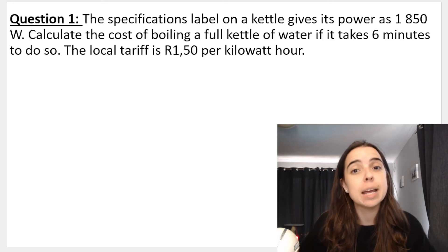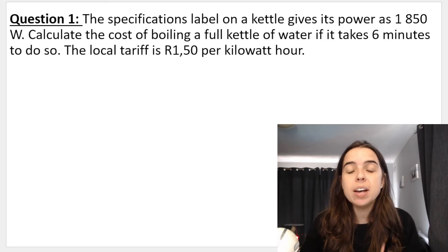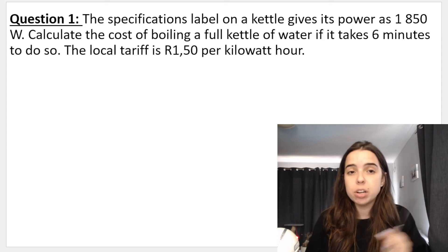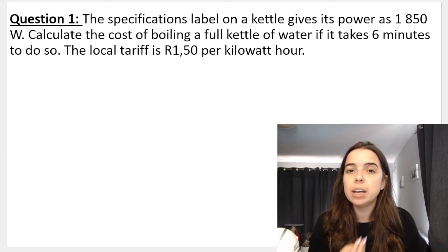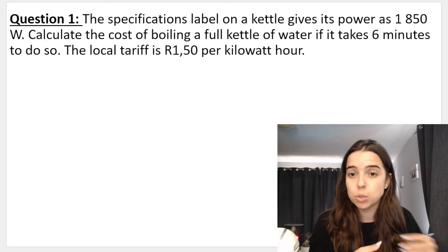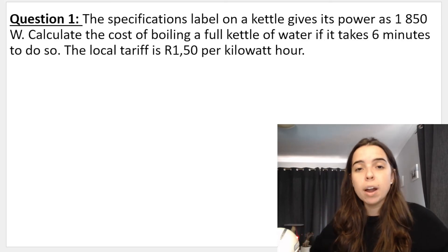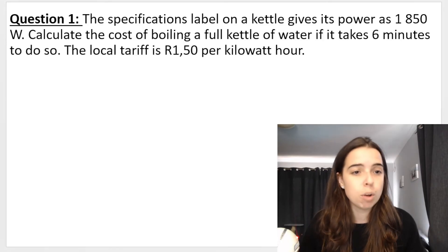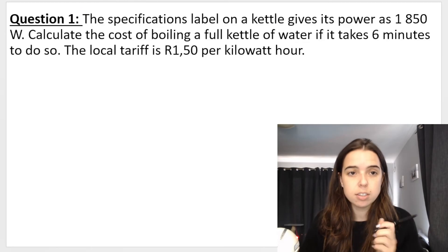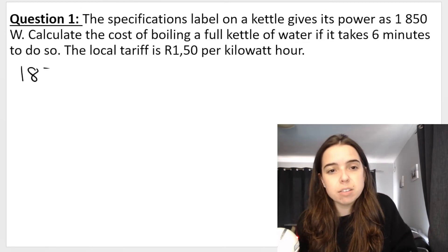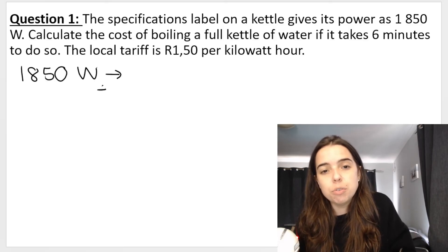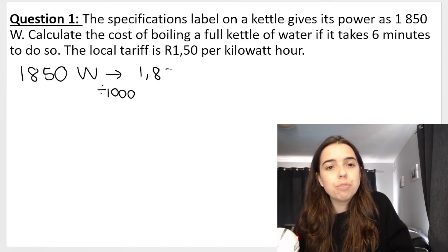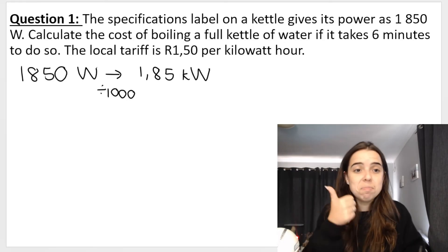I think the best way for me to show you this is to do an actual question. So it says here the specifications label on a kettle gives its power as 1850 watts. Now immediately you know you're going to work out cost of electricity. You can't have it in watts, it needs to be in kilowatts. The local tariff is 1.5 rand per kilowatt hour. I need to convert power to kilowatts. My power is given in watts so I've got 1850 watts. You divide by a thousand. So dividing by a thousand will get me 1.85 kilowatts. Step one done.